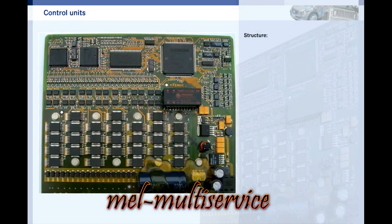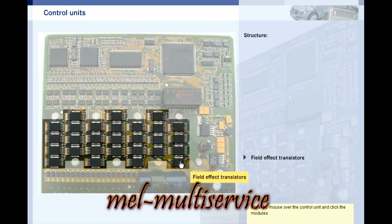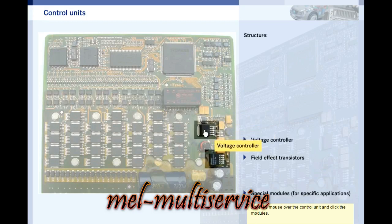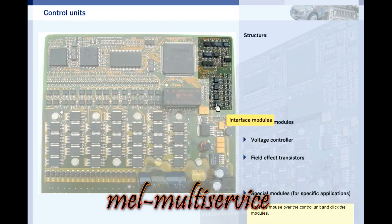Control units contain various semiconductor modules on a circuit board. Most of them are similarly complex to the ones shown above. The transistors amplify the signals of the output modules. These modules are application-specific, meaning the vehicle manufacturer orders them with precisely defined functions from the semiconductor manufacturer. The voltage regulators convert the fluctuating voltage of the vehicle's electrical system to a stable supply voltage for the modules.